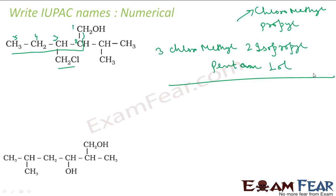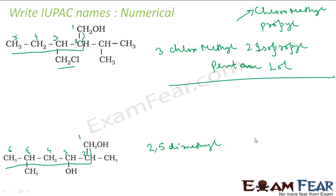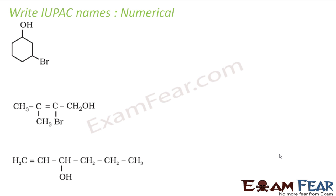Here I also have an OH group and a CH3 group; OH is the main group. The longest chain is one, two, three, four, five, six carbons — hexane. I have methyl groups at positions two and five, so it is 2,5-dimethyl. With OH at positions one and three, the full name is 2,5-dimethylhexane-1,3-diol.